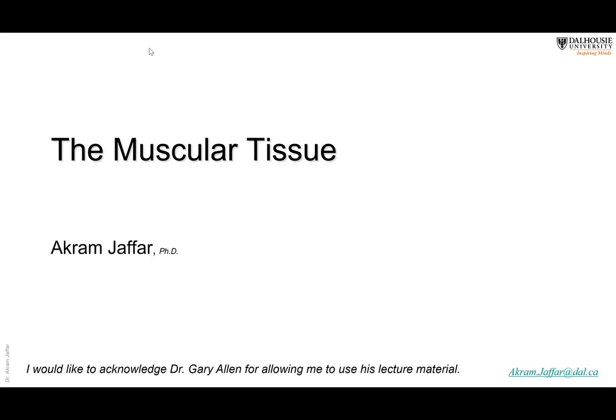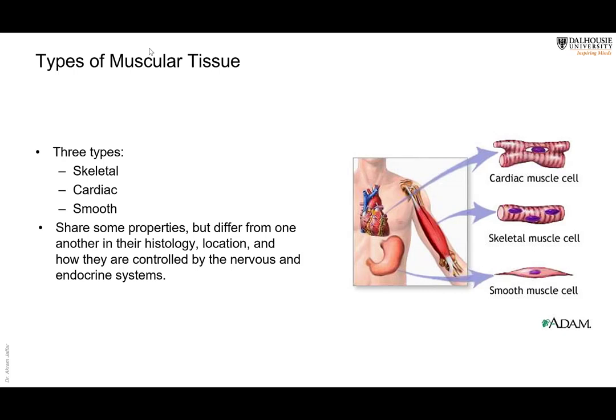The main topic of today's lecture is the histology of muscle. There are three types of muscles in the body: skeletal muscles, cardiac muscle, and smooth muscle. These are present at different locations. What is common between them is that they have features of muscular tissue, like electrical excitability and contractility. But they differ from each other in the place where they are located and the histology — how they appear under the microscope.